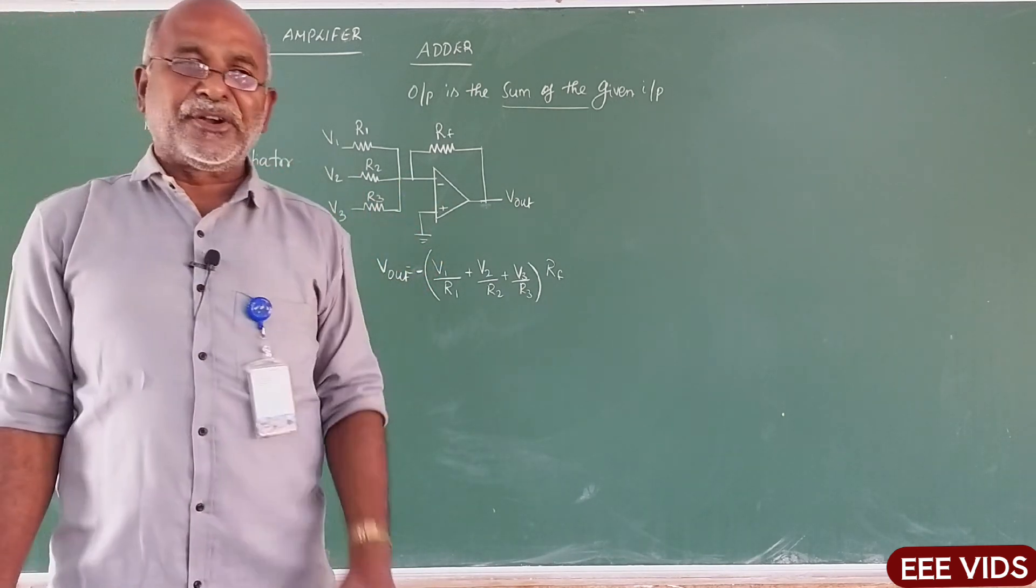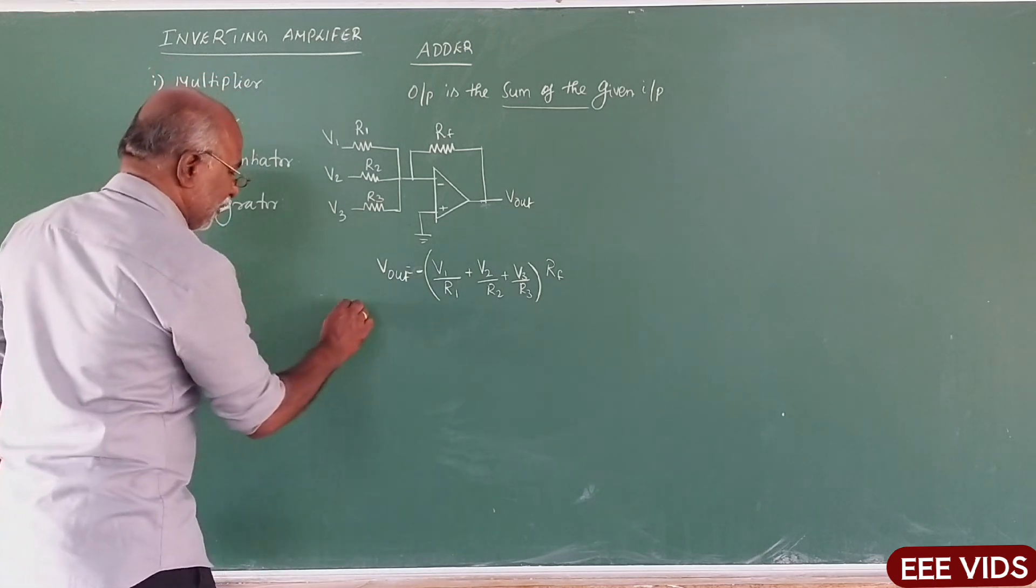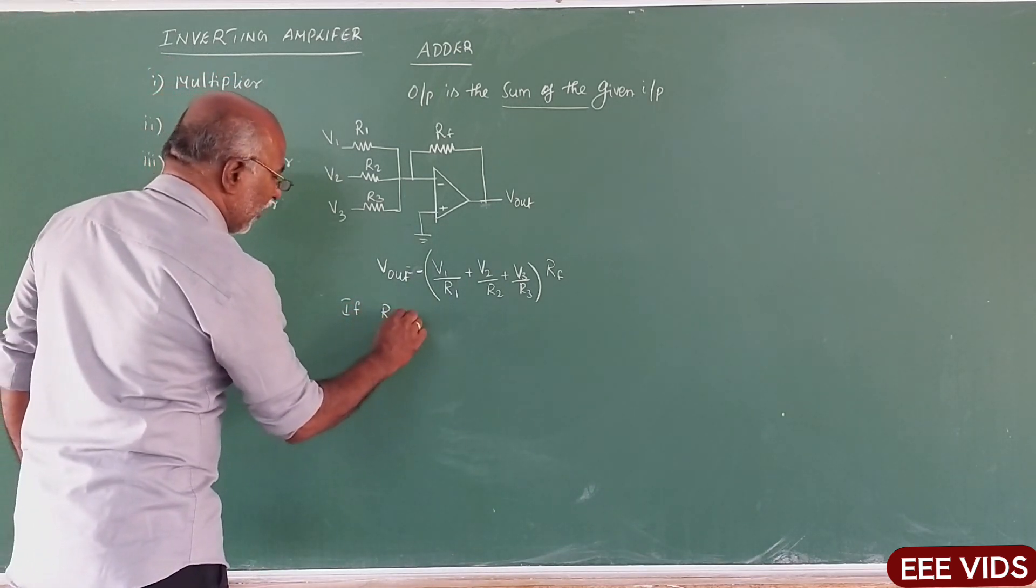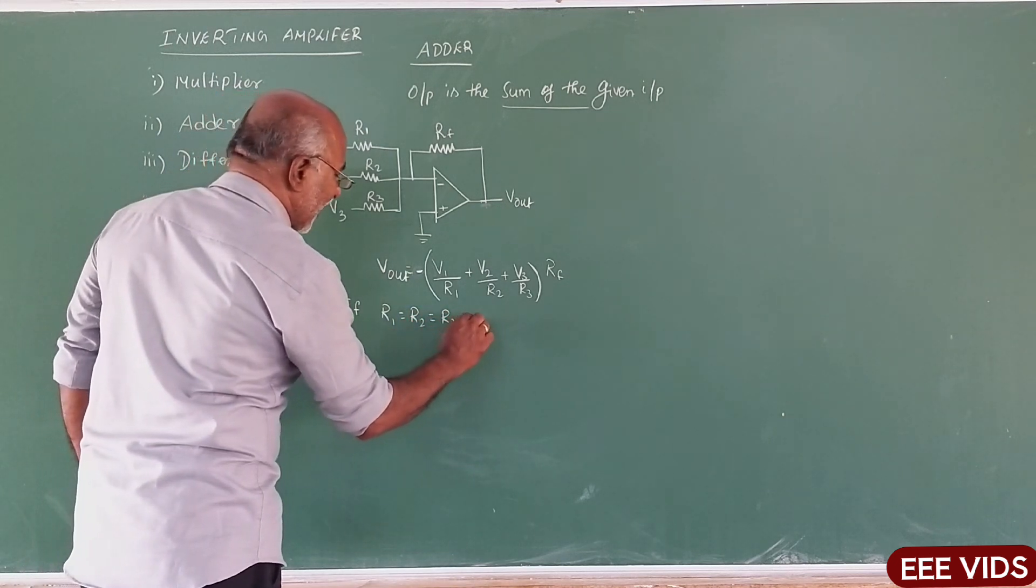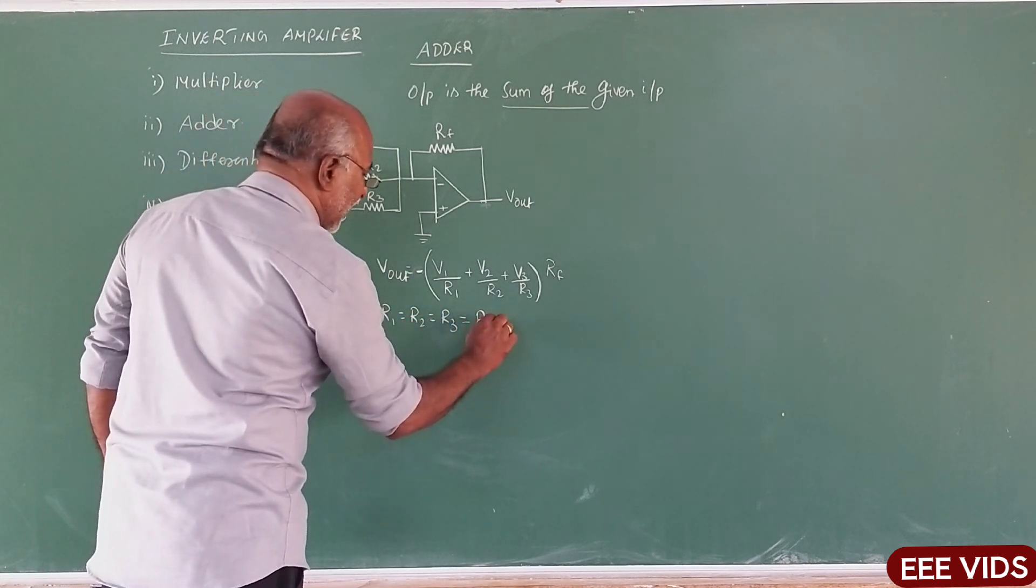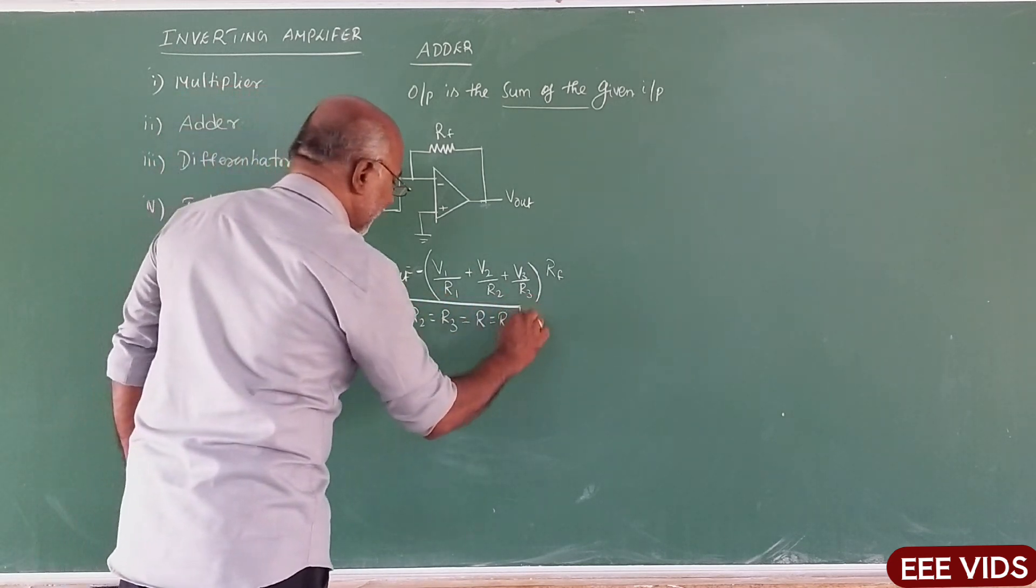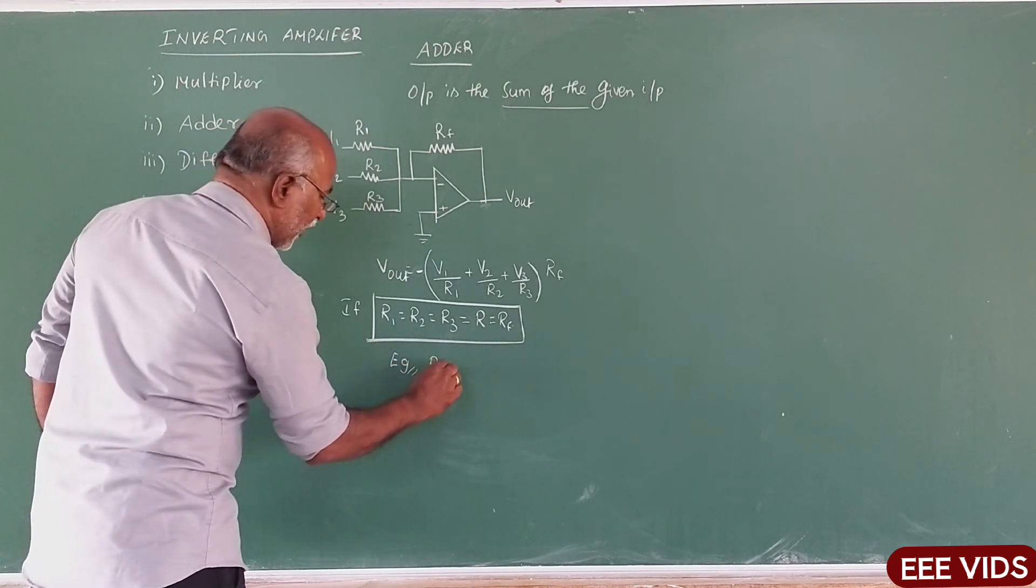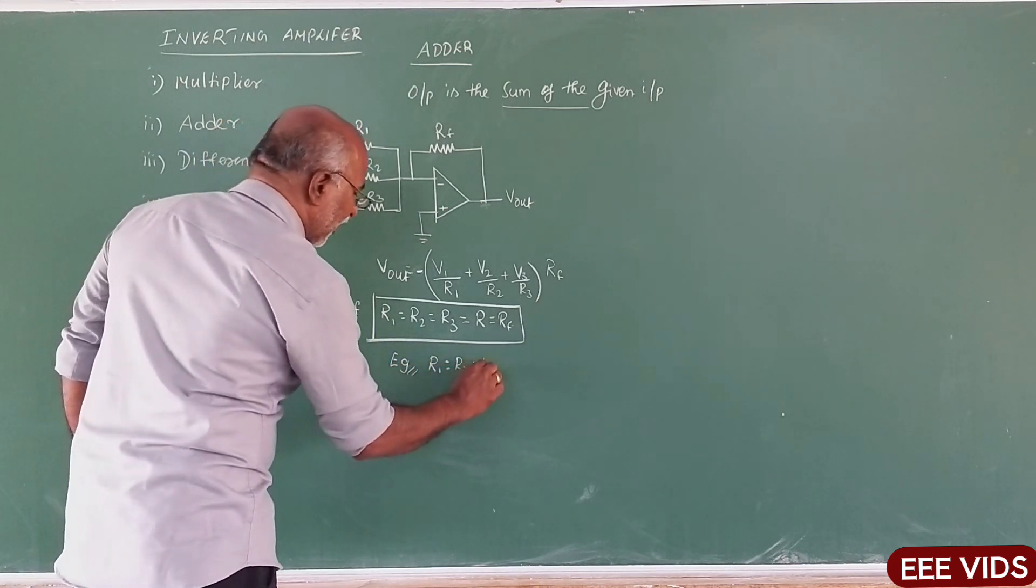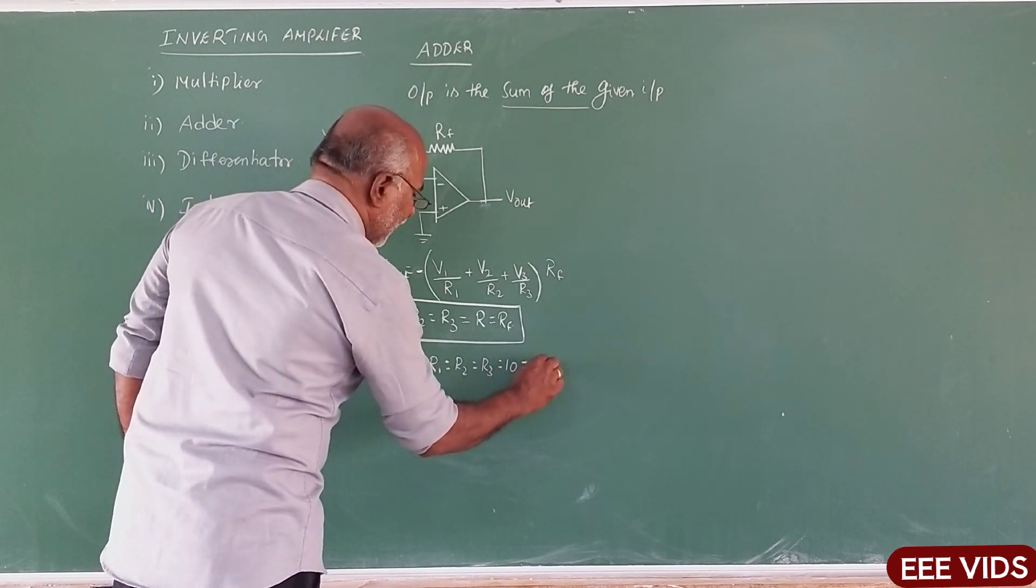If R1, all equal, R1, R2, R3, all are equal value, equal to R, equal to Rf. Condition, for example, one example: if R1, R2, R3, all 10 Ohm, then Rf is 10 Ohm.